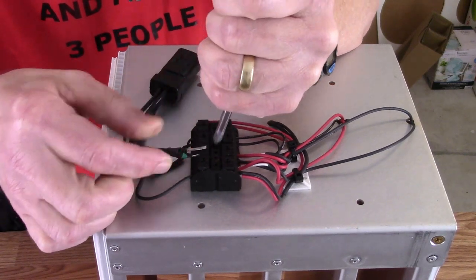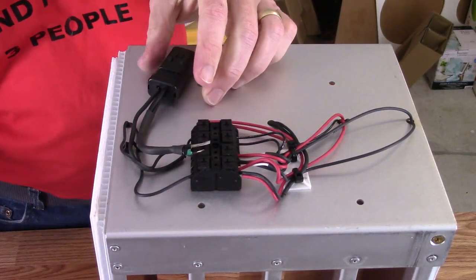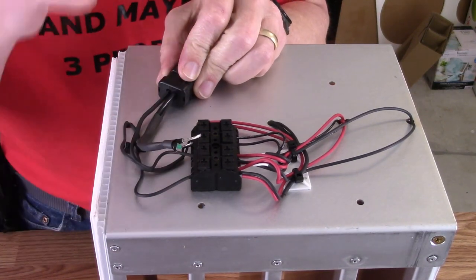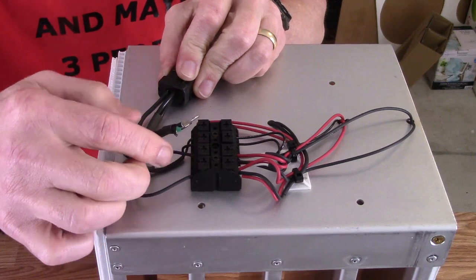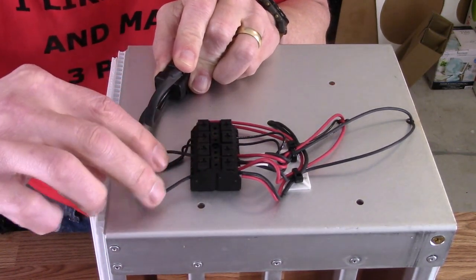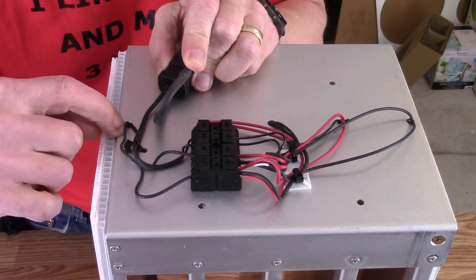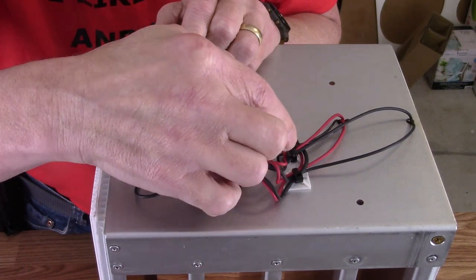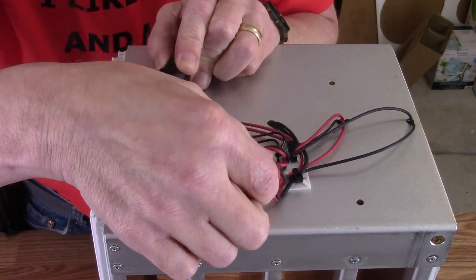This is the whole distribution of the power. The power is coming in on these two and then coming into this block. And then these two wires go to the top tray heater, the one that's over the top of the whole thing.